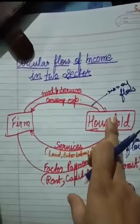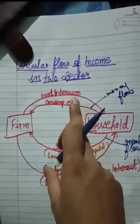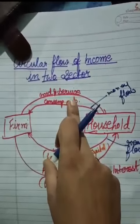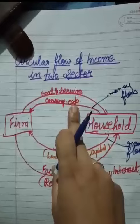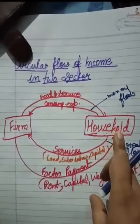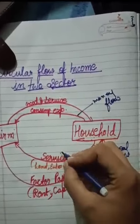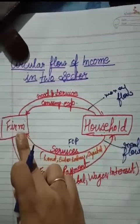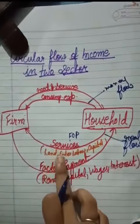The household consumes the goods and services and incurs expenditure, commonly known as consumption expenditure. In return, the household provides factors of production to the firm, which include land...